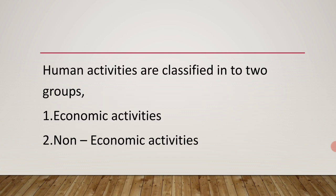All human activities are classified into two groups: economic activities and non-economic activities. Any economic activity that results in the production of goods and services is called an economic activity. For example, farming is an economic activity because it results in the production of goods and services. Later on we will talk about non-economic activities.